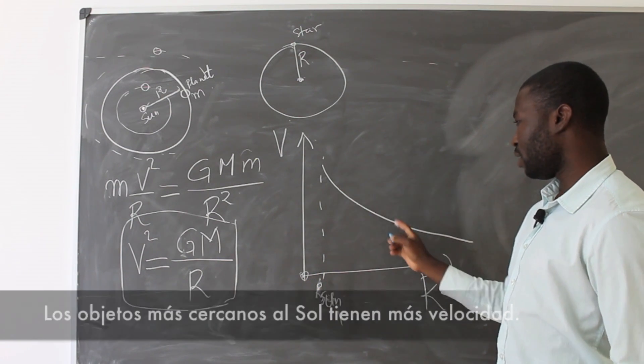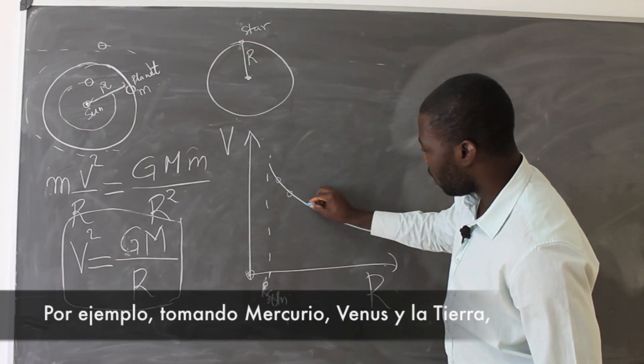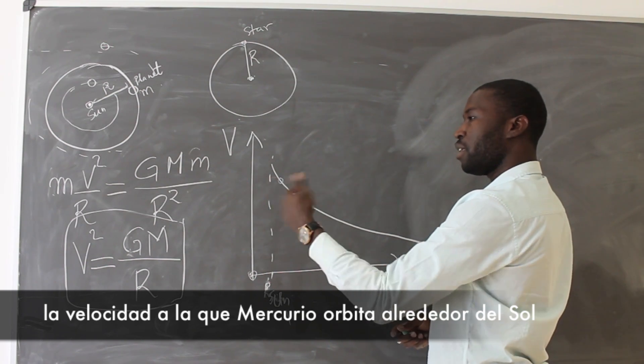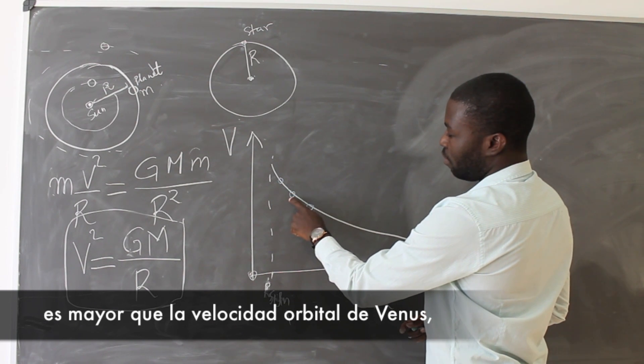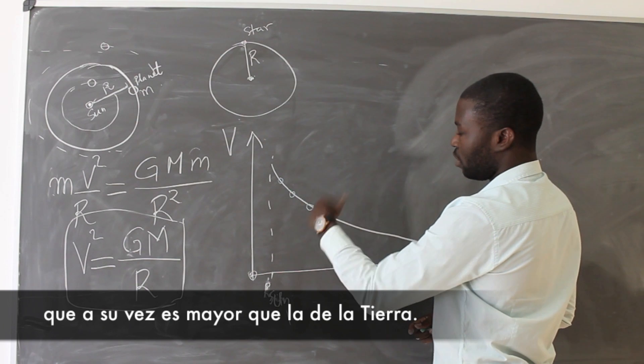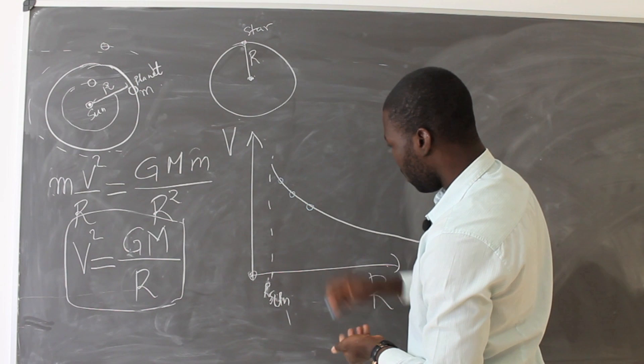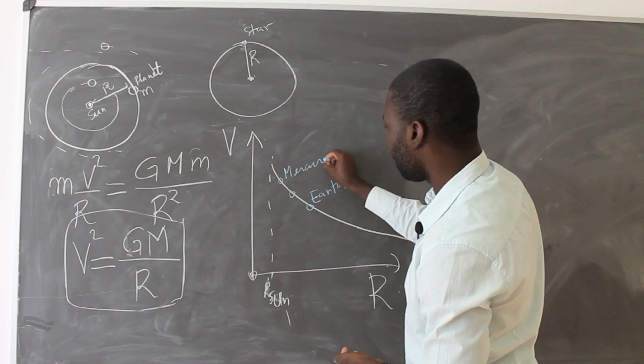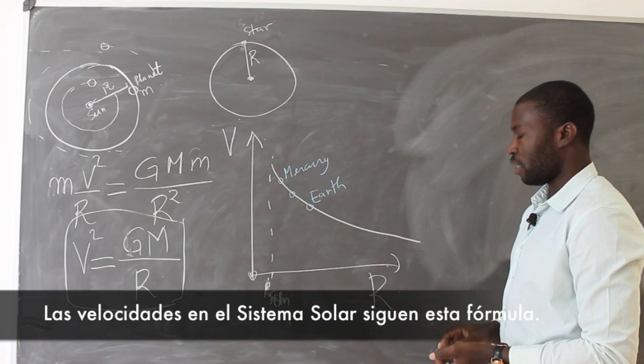For example, you take the Mercury, you take Venus and Earth. The velocity at which Mercury is orbiting around the sun is greater than the one which is for Venus, which in turn is larger than the one for Earth. This should follow precisely the Newtonian laws of gravity.